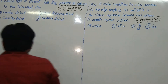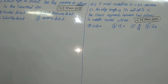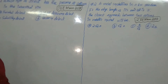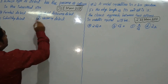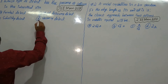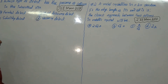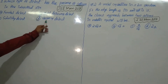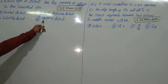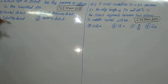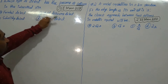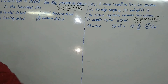Since the question mentions cations and anions, the compound is an ionic compound — an ionic solid. For ionic solids there will be no simple vacancy defect or interstitial defect, as those apply to non-ionic solids. For ionic solids, the relevant defects are Frenkel defect, Schottky defect, and possibly metal deficiency defect.